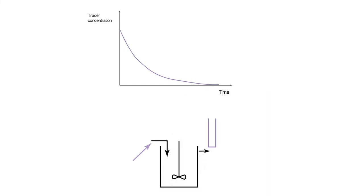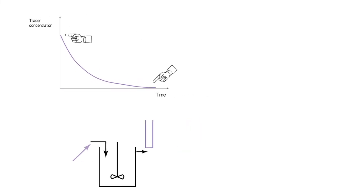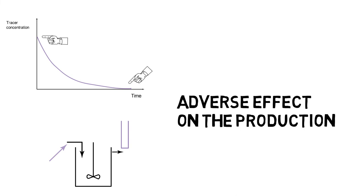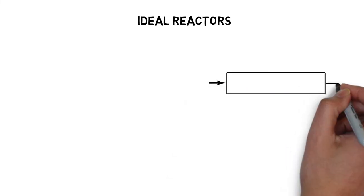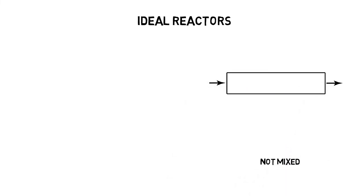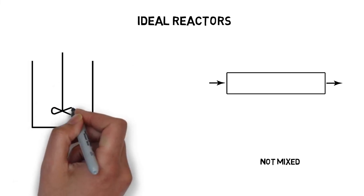In a CSTR, on the other hand, the residence time distribution decreases exponentially with time. A large amount of tracer exits the reactor after a short time, after which less and less tracer is detected at the outlet. However, this wide distribution of residence times in the CSTR has an adverse effect on the production of the desired molecule. In fact, it is preferable to use a reactor in which the residence time distribution is narrow. That is, where all the molecules exit the reactor at the same time, like in the plug flow reactor.